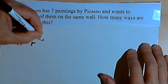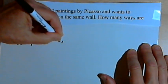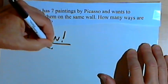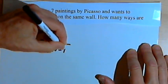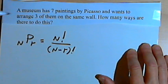So NPR equals N factorial over N minus R, that whole thing, factorial.